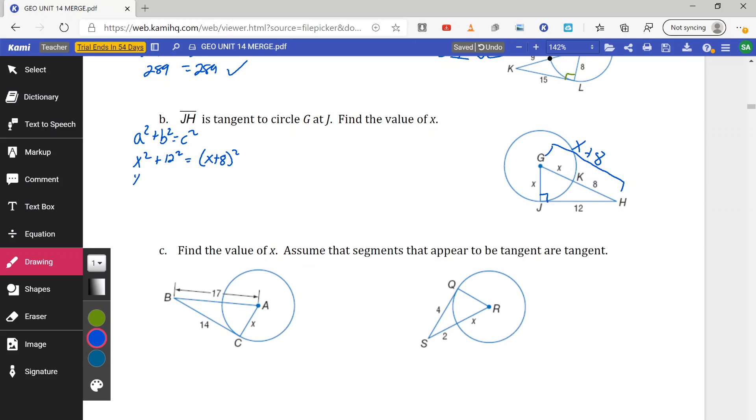So X squared is going to remain X squared. 12 squared is 144. Now X plus 8 does not mean X squared plus 8 squared. It really means X plus 8 times X plus 8. So X squared plus 144, we're going to use distribution. X times X is X squared, X times 8 plus 8X, 8 times X plus 8X, 8 times 8, 64. Combine our like terms, so we end up X squared plus 144 is equal to X squared plus 16X plus 64.